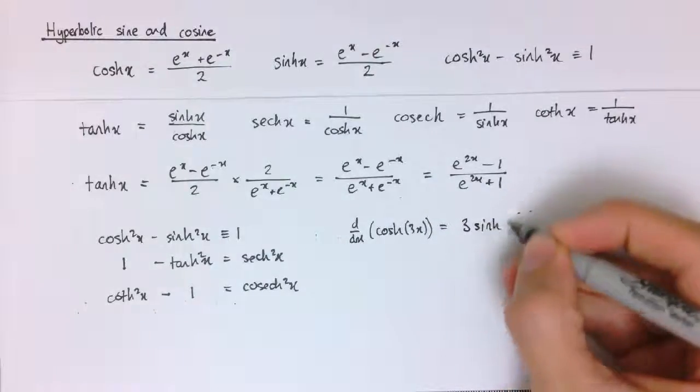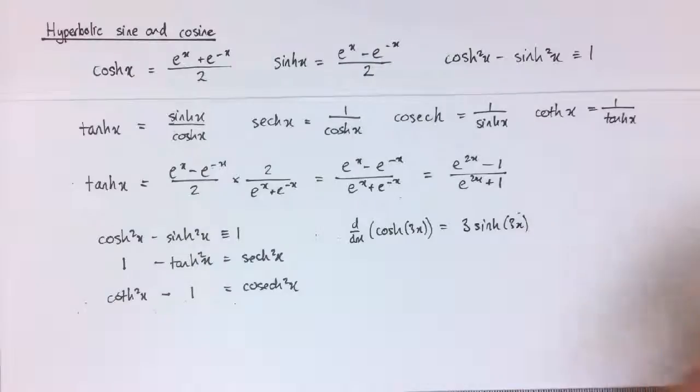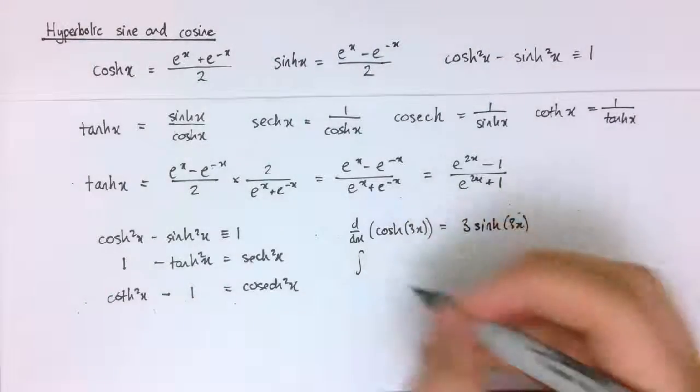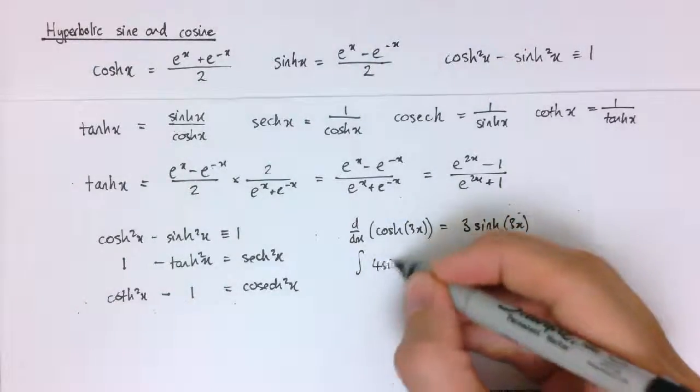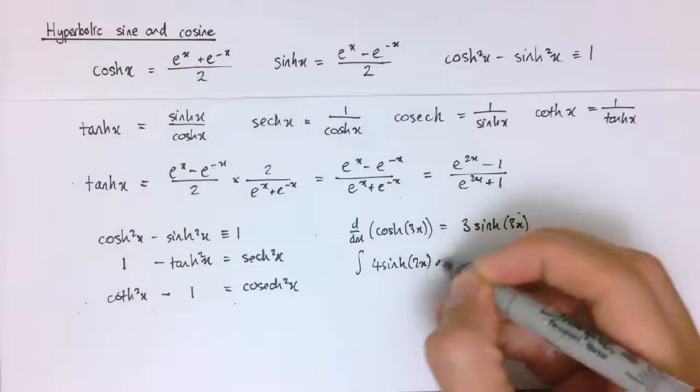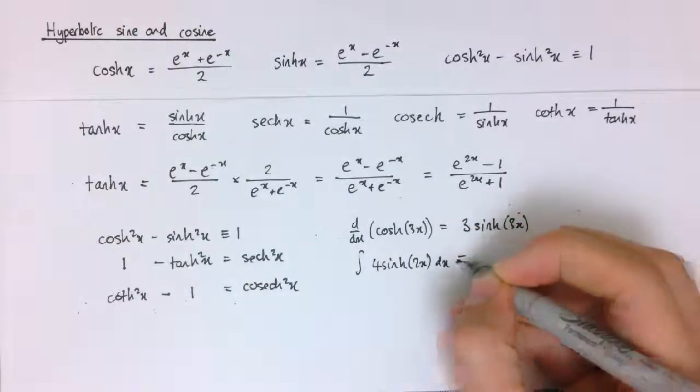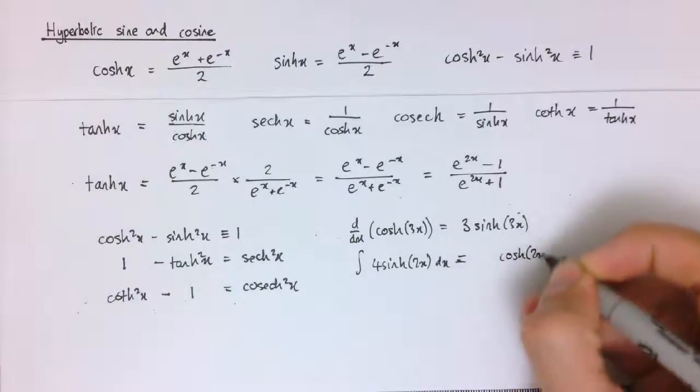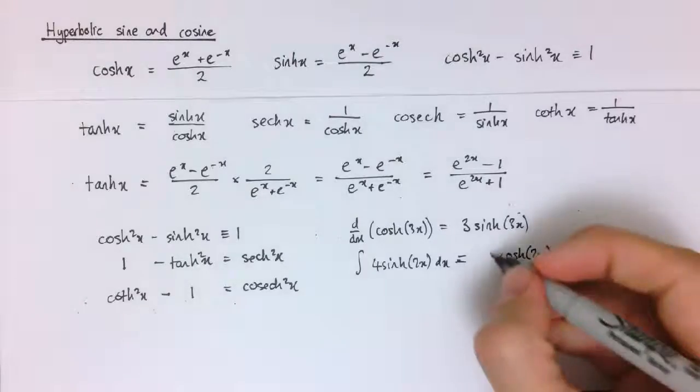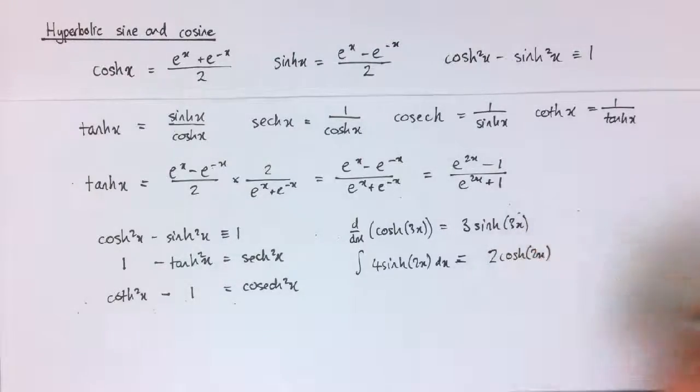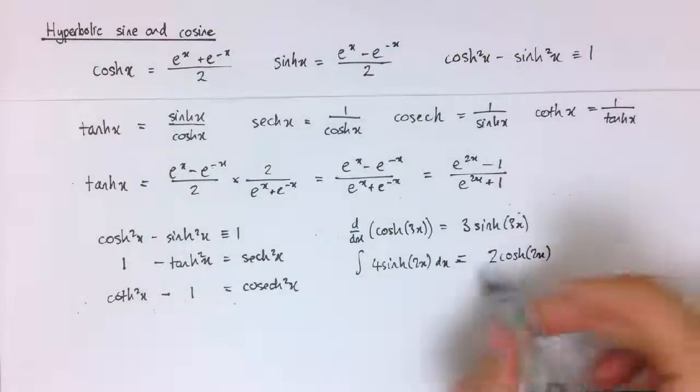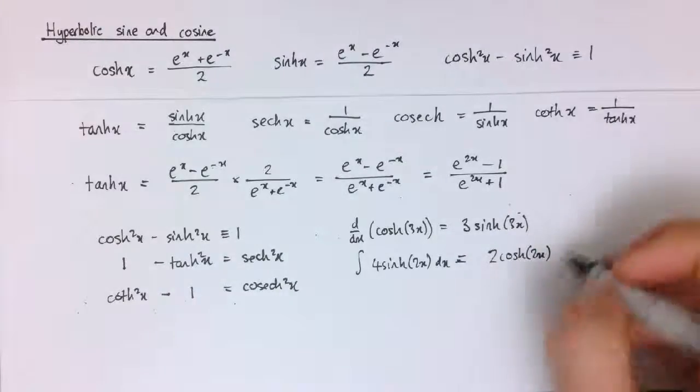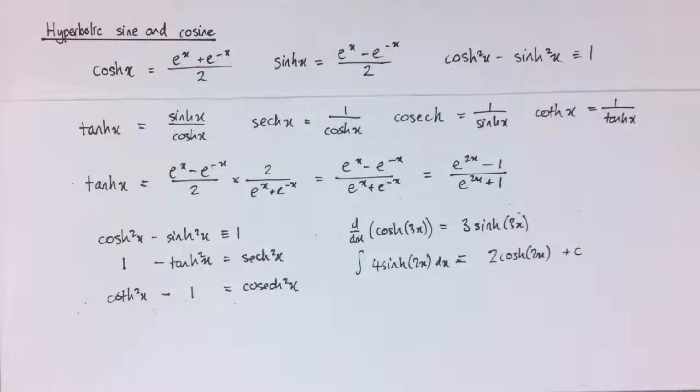If I wanted to integrate 4 sinh 2x dx using the reverse chain rule here, because I know cosh differentiates to sinh, so sinh is going to integrate to cosh, so I'm going to get something with form cosh 2x. And we can see we need a factor of 2 in front here. If I differentiated this, I would get 4 sinh 2x by the chain rule, and of course, plus c for the indefinite integral.